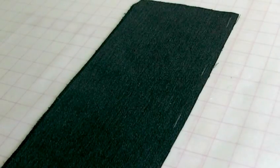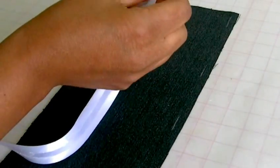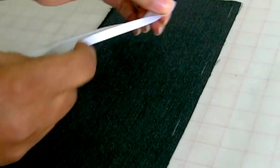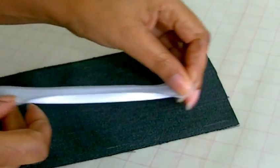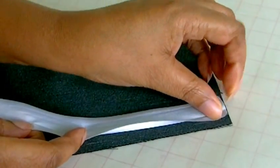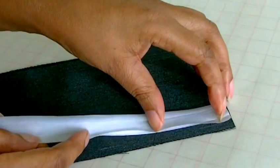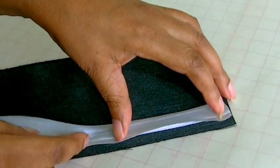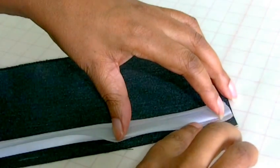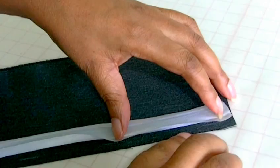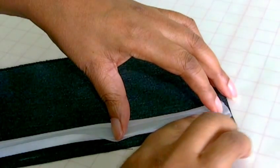And here we have it. So you get the raw edge of the bias binding, and you're lining that up against the chalked line. So therefore, you still have the 1.5 centimeters or five-eighths of an inch seam line.